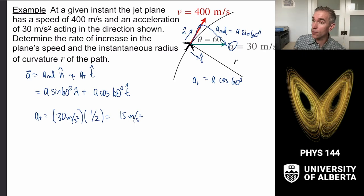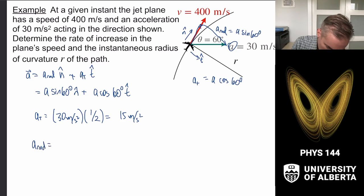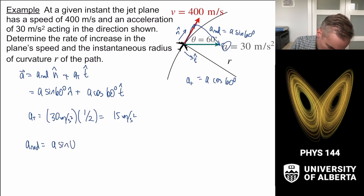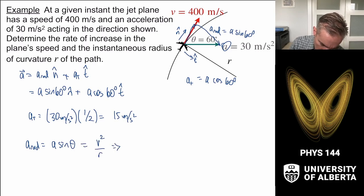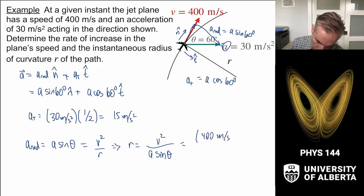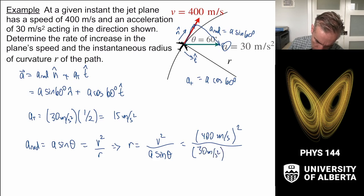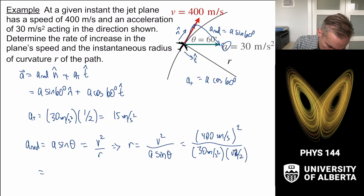We do the same calculation for the radial component. The radial component equals 30 meters per second squared times sine of 60 degrees, but that also equals v squared over r. So we can figure out that r equals v squared over a sine of theta, which is 400 meters per second squared over 30 meters per second squared times sine of 60 degrees, which is root 3 over 2. Grinding that out, we get an answer of 6.16 kilometers.